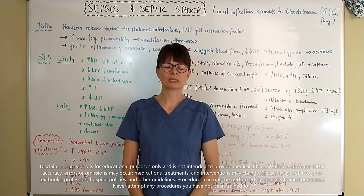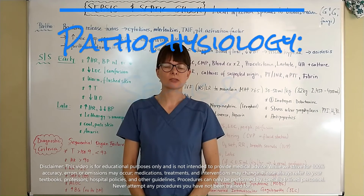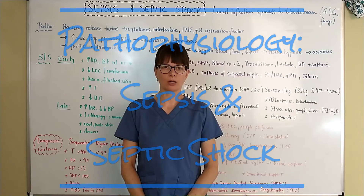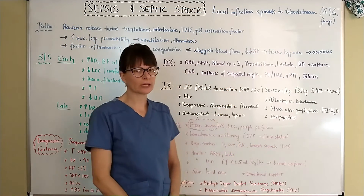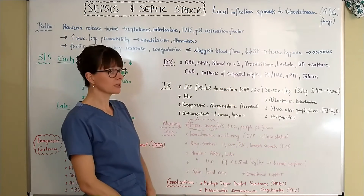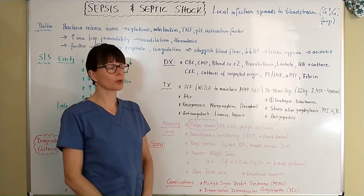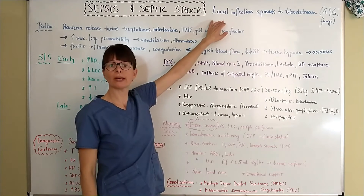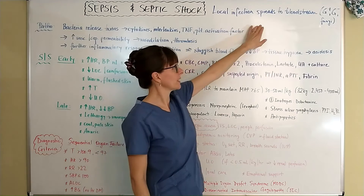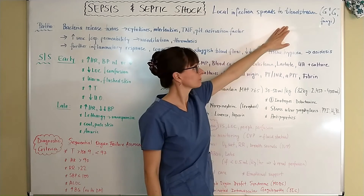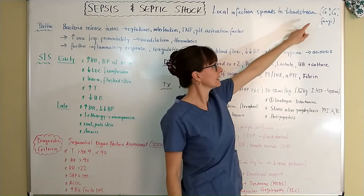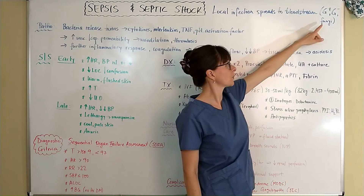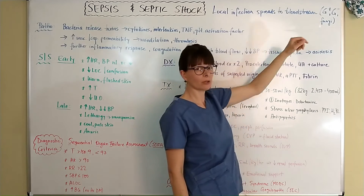Welcome to Nursing School Explained and this video on sepsis and septic shock. Sepsis usually occurs from a local infection that can occur anywhere in the body that spreads into the bloodstream. Those can be gram positive as well as gram negative bacteria, but also fungi can be the offensive organism.